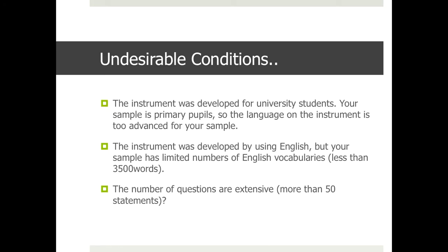We call it an undesirable condition. For example, the instrument that was developed is for university students, whereas your sample is primary school pupils. Different types and characteristics of participants make it undesirable. Another undesirable condition is when the pre-existing questionnaire was developed for a sample with limited English vocabulary — less than 3,500 words.